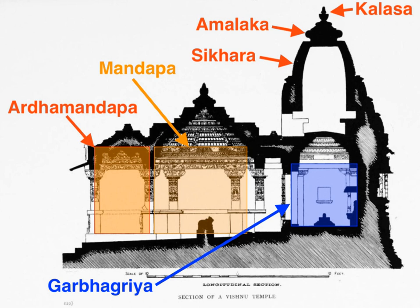A Hindu temple is a symmetry-driven structure, with many variations on a square grid of padas, depicting perfect geometric shapes such as circles and squares. Susan Lewandowski states that the underlying principle in a Hindu temple is built around the belief that all things are one and everything is connected. A temple, states Lewandowski, replicates again and again the Hindu belief in the parts mirroring, and at the same time being, the universal whole — like an organism of repeating cells.